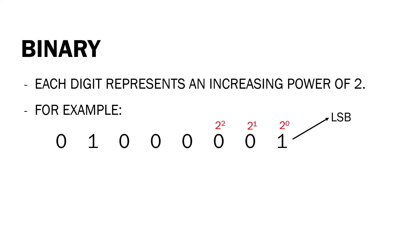Each digit is in an increasing power of two, so after two raised to two we have two raised to three, then two raised to four, two raised to five, two raised to six, and two raised to seven. The leftmost digit in a binary is called the MSB or the Most Significant Bit. Now we're going to simplify each positional value.